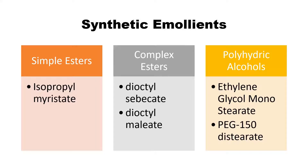Third are polyhydric alcohols, which have large complex molecules, producing emollients like ethylene glycol monostearate or the PEG (polyethylene glycol) series such as PEG-150 distearate. These are examples of polyhydric alcohols. Depending on the complexities of the acid and the alcohol, different types and molecular structures of emollients can be synthesized in the lab.